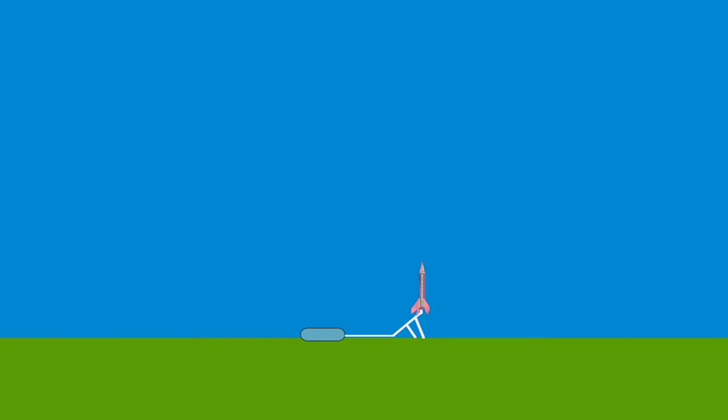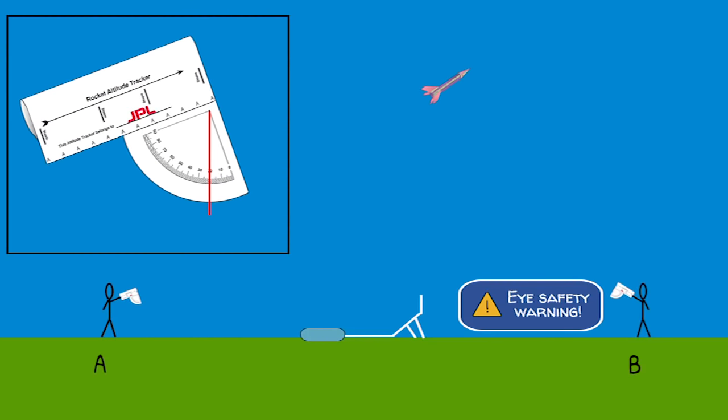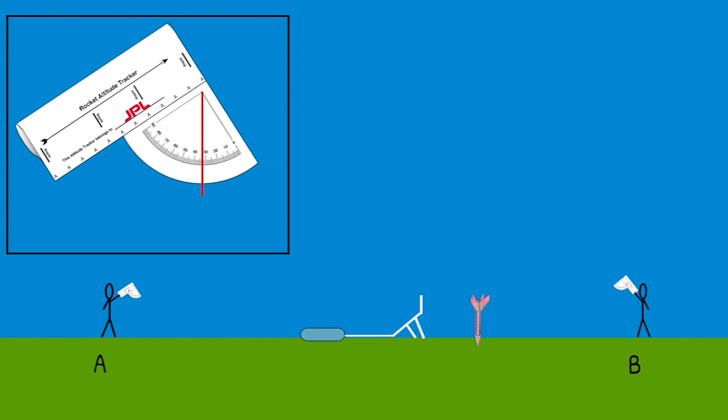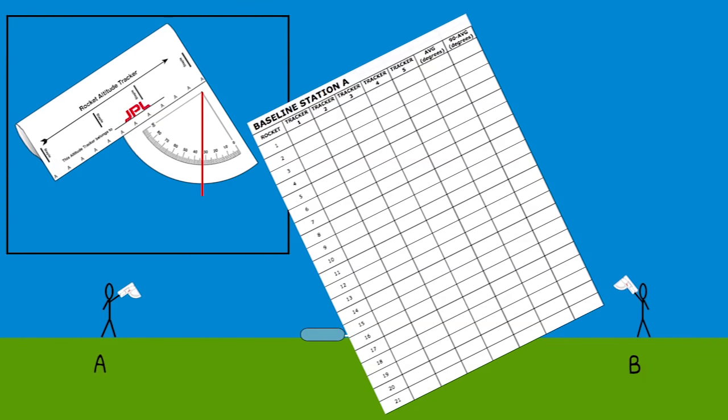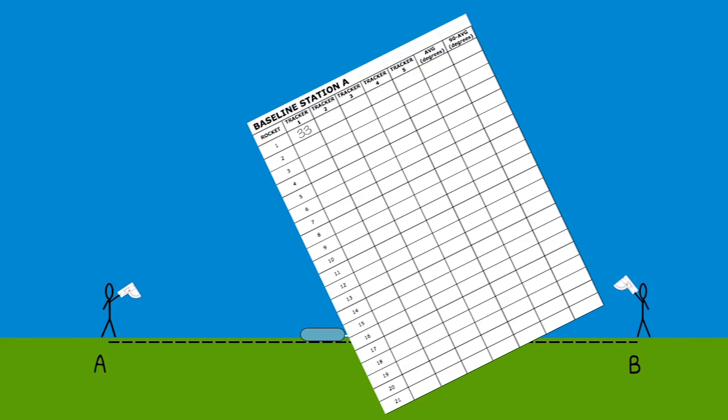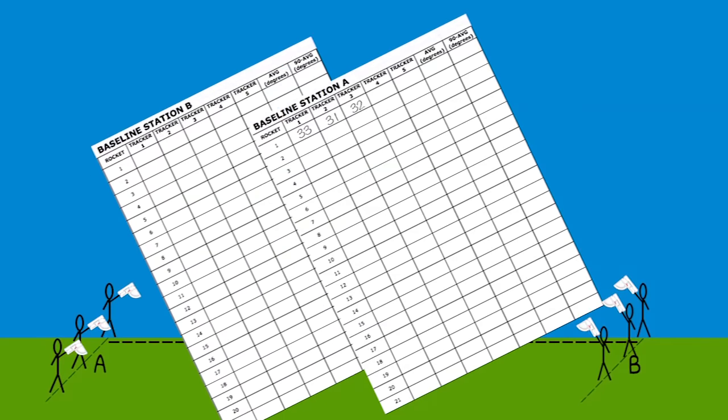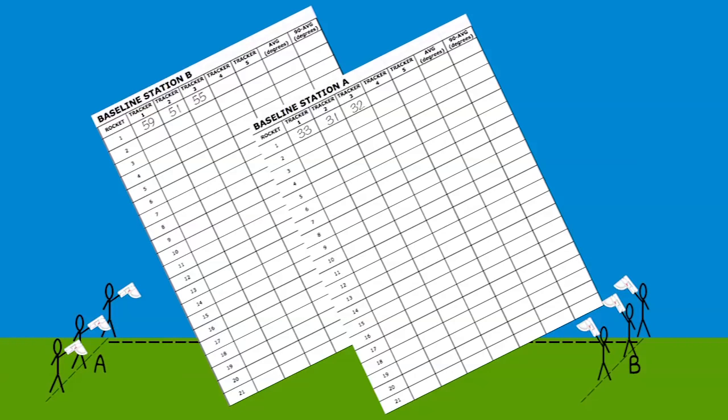To calculate how high the rocket flies, start by having students stand at two locations a measured distance away from the rocket. When the rocket launches, students will use altitude trackers to follow the rocket to its highest point. Hold the tracker in place and have another student make note of the angle indicated by the string. Record these measurements on the data log sheet. Having multiple students at each measurement location provides more data points and gives students a more accurate average angle of elevation to use when calculating the height of the rocket.